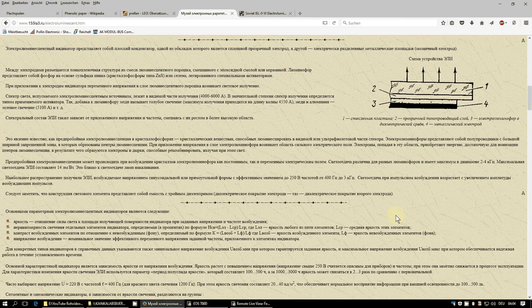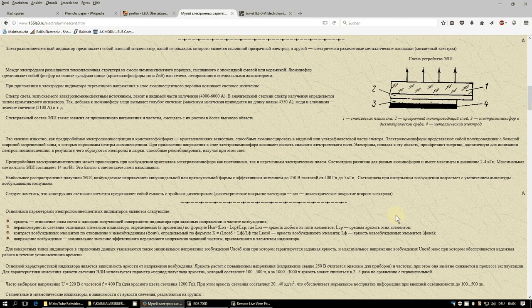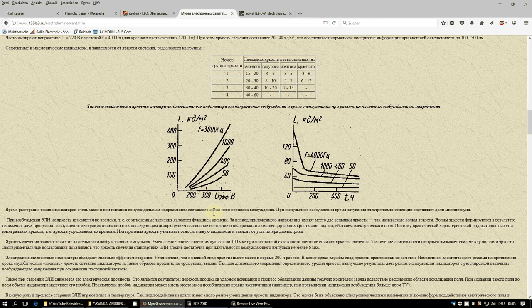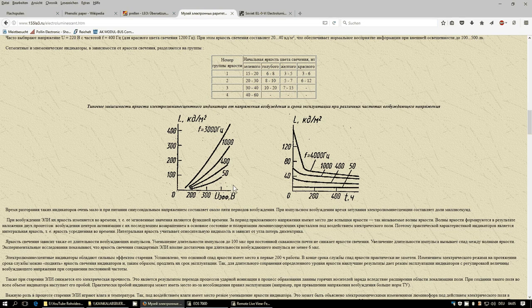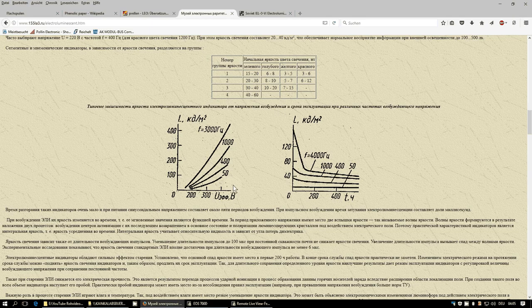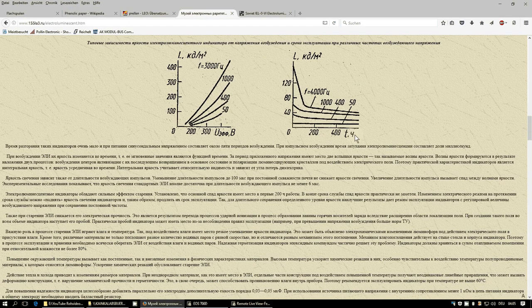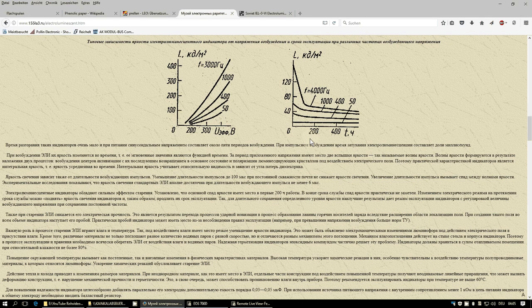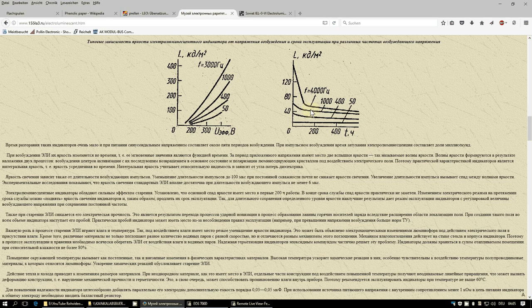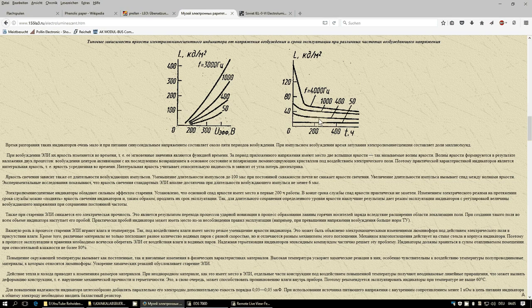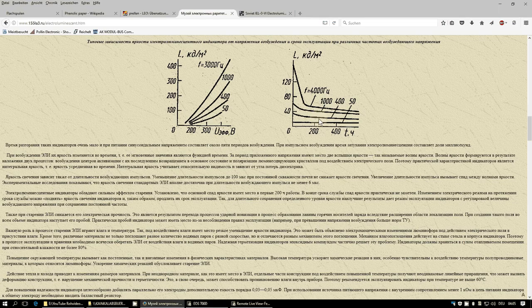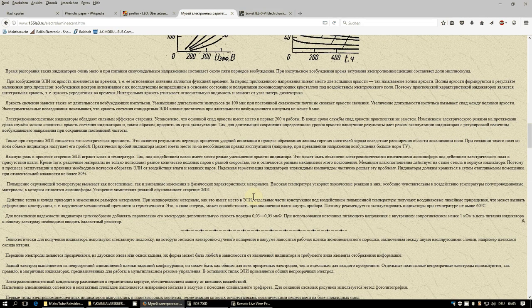Some explanation about the principle of EL displays. And here we have a graph about where we have on the x-axis, the voltage on the y-axis, we have the luminescence in candelas per square meter. And here, this one, here we have on the x-axis, the frequency. So the brightness also varies with the frequency, but the lifetime goes heavily down when you use the frequencies higher than 400 hertz.